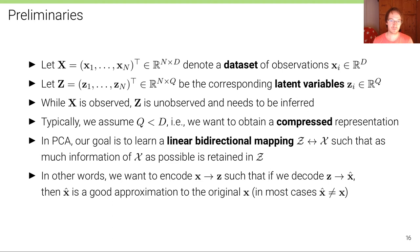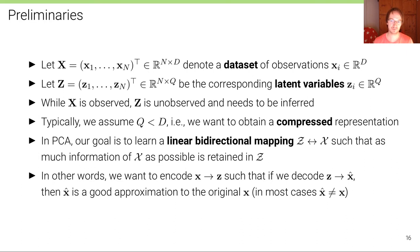While X is observed, C is unobserved. The latent variable is unobserved and needs to be inferred from X alone. Typically, we assume Q to be smaller than d because we want the model to yield a compressed representation. In PCA, our goal is to learn a bidirectional mapping such that we have both an encoder and a decoder — and as such, it's an autoencoder model. We want a mapping from the latent space C to the observation space X, and from the observation space X back to the latent space C.